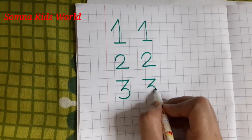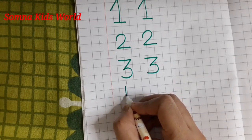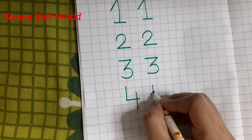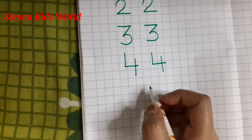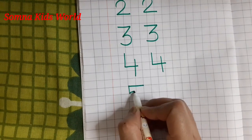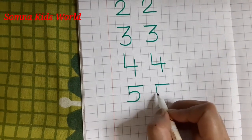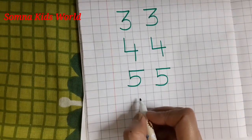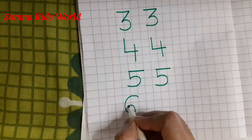After two it's number three: slipping line, slanting line, curve, slipping line, slanting line, curve. After three it's number four: standing line, slipping line, slanting line, slanting line, slanting line, slanting line.